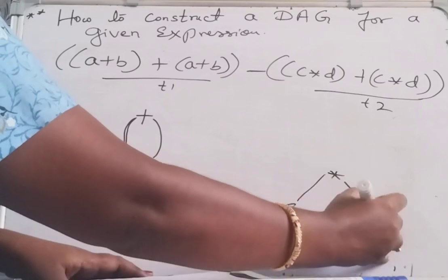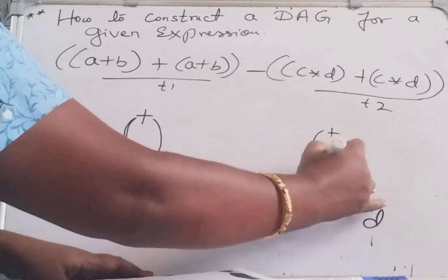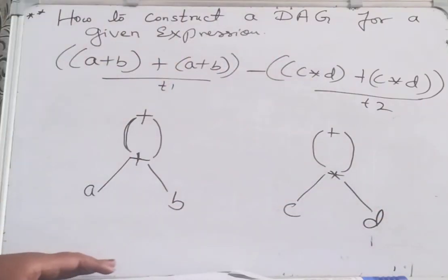C star D, the whole plus C star D is there. Write like this: C star D.